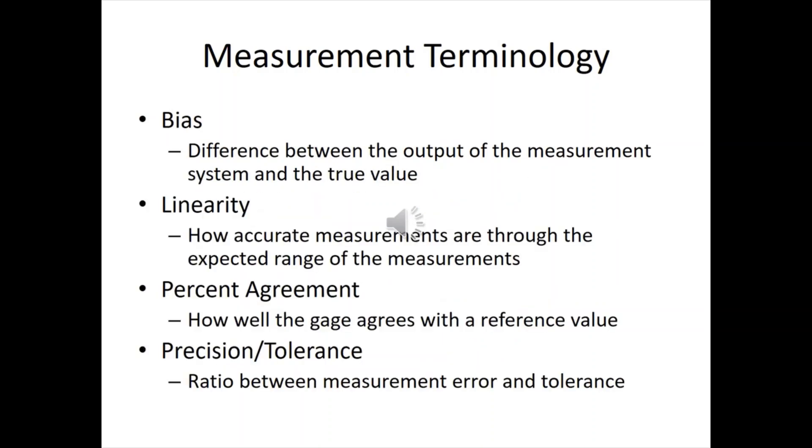Some more measurement terminology. Bias. That's the difference between the output of the measurement and what the true value is of the actual thing you're measuring. Linearity. This happens a lot, especially with strain gauges and things. If you get outside the range of the gauge, you start getting distortion. It's actually not linear. It's basically a little parabola or something.